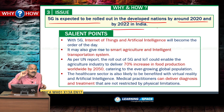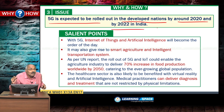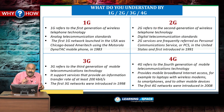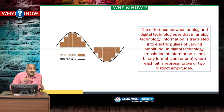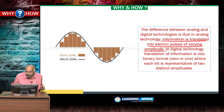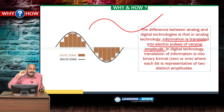5G will bring revolutionary changes even in the diagnosis and treatment of human beings. Now, 1G is analog communication. Starting from 2G, it is digital. Analog means information is translated into electric pulses of varying amplitude, whereas in digital technology, translation of information is in binary format where each bit is representative of two distinct amplitudes. From 2G onwards, we are in digital technology.